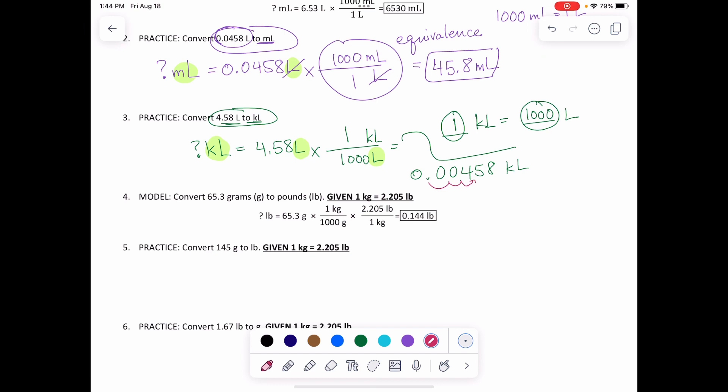I'm moving the decimal three places to the right. It is a number that is smaller than one. So that would be 4.58 times 10 to the negative three kiloliters.